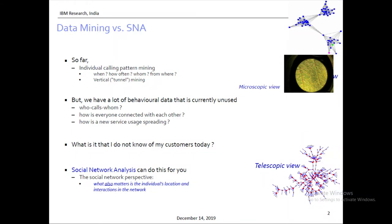The way I like to distinguish between data mining and social network analysis: suppose we look at people who are calling each other on the telephone. I think of data mining as being who calls how often. If I know that you call your parents every Saturday, I know more about each one of you — that is classical data mining, a microscopic view of every person.